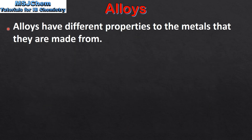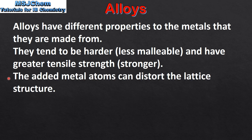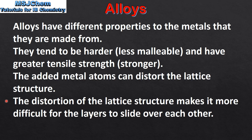Alloys have different properties to the metals they are made from. They tend to be harder, less malleable, and have greater tensile strength, which means they're stronger. The added metal atoms can distort the lattice structure. The distortion of the lattice structure makes it more difficult for the layers to slide over each other.